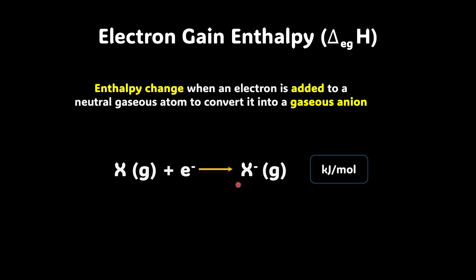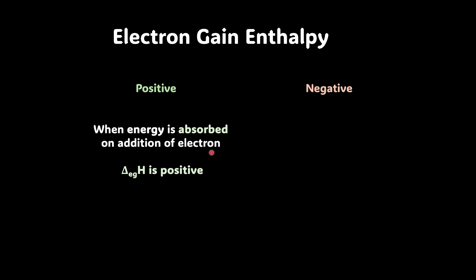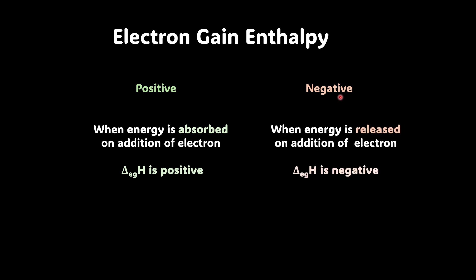In the whole process of becoming an anion from a neutral gaseous atom, either the energy has to be absorbed or energy is released. So depending on that, we can have electron gain enthalpy as positive or negative. When energy is absorbed on addition of an electron, delta EGH is positive. Whereas when the energy is released on addition of the electron, delta EGH is negative.